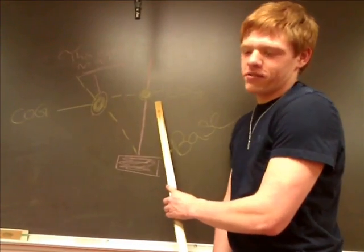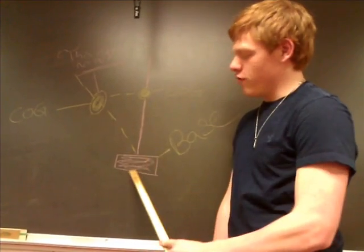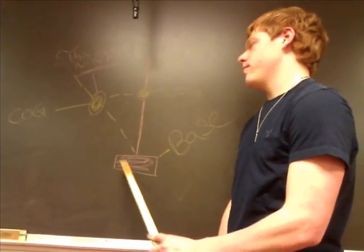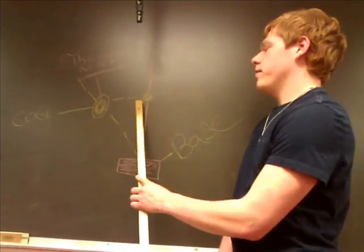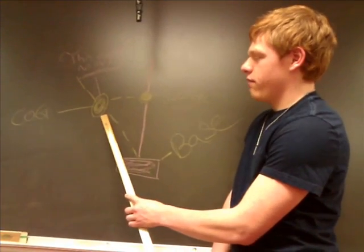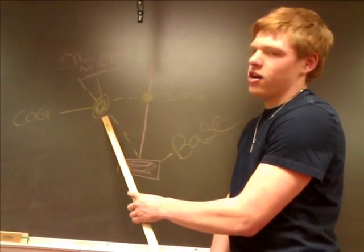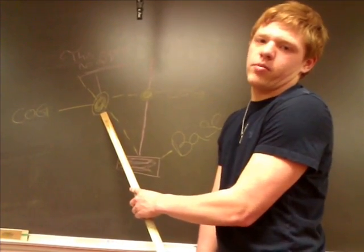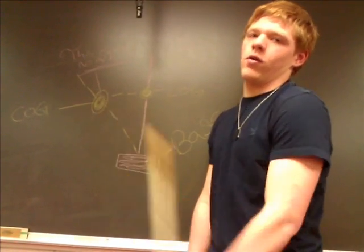When an object's center of gravity is over the base, the object is stable. When the object's center of gravity is not over the base, the object is unstable and therefore will fall to the ground.